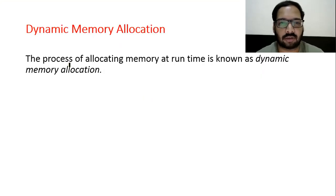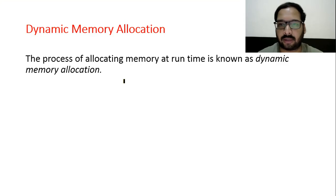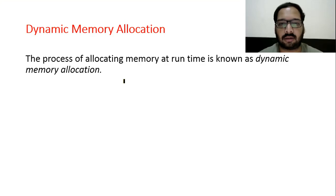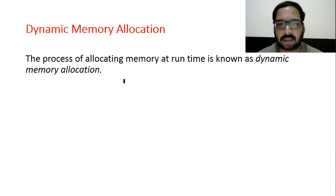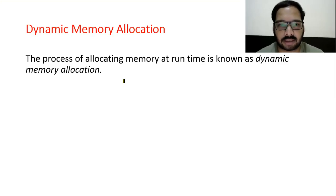Dynamic memory allocation: the process of allocating memory at runtime is known as dynamic memory allocation. If you want to allocate memory according to the user's requirement at runtime, we use dynamic memory. If we want to use memory according to the programmer's specification, we use static memory allocation. There is a video in this series that explains this properly.